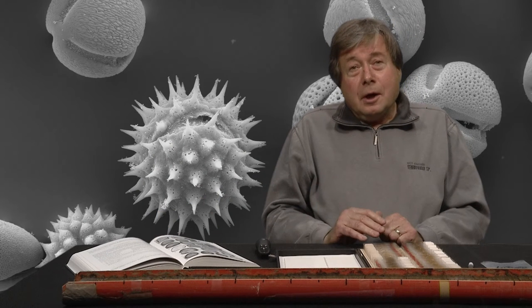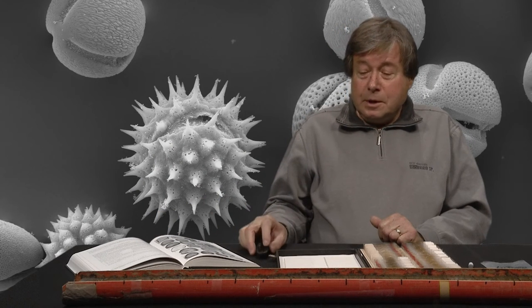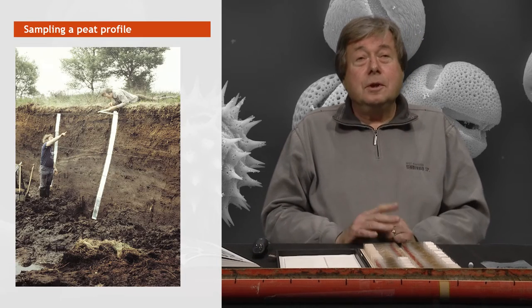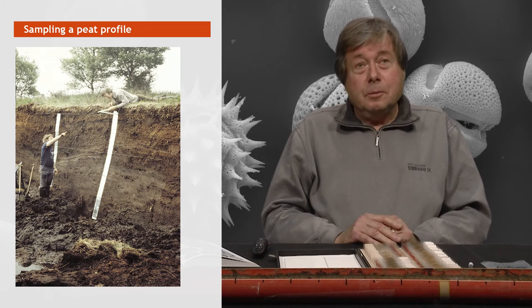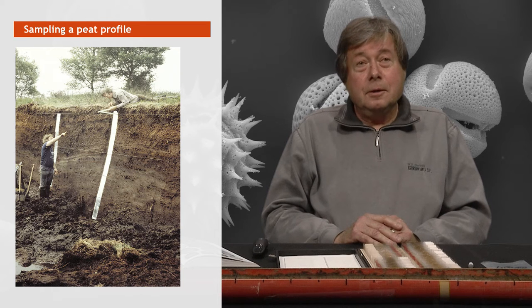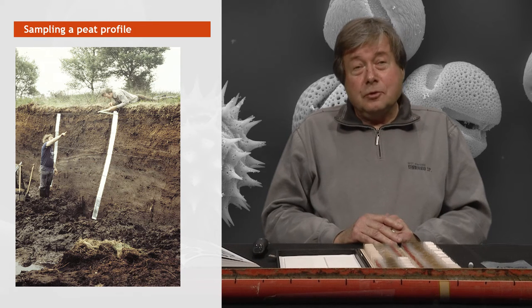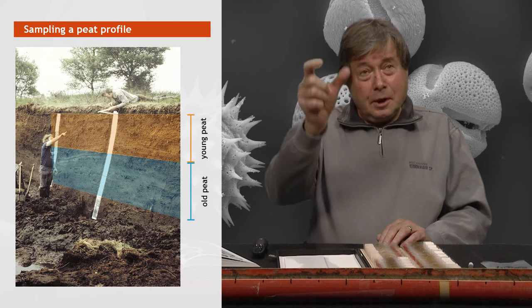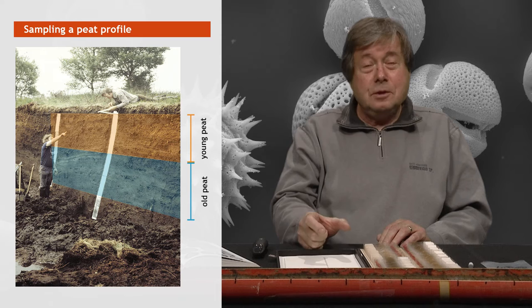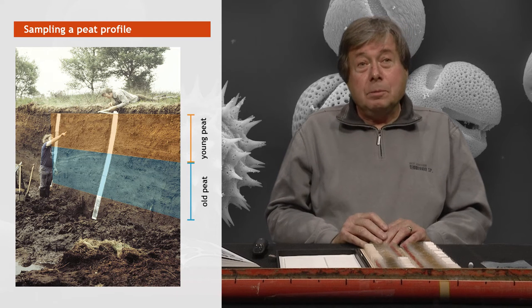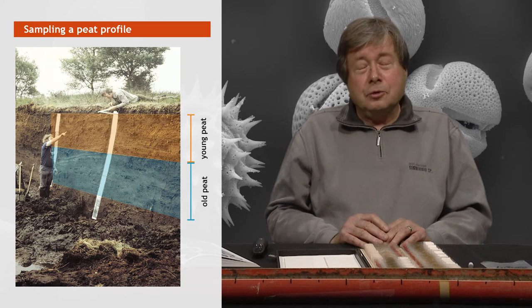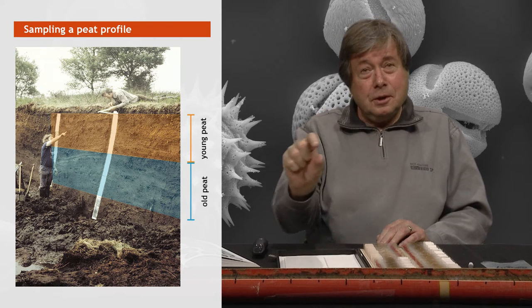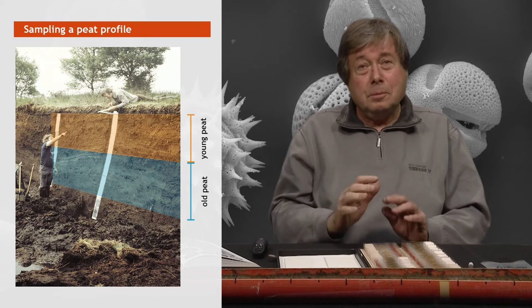What is our archive? Well, that can be a peat bog. Here you see a profile of about two and a half meters high. And the oldest peat is at the bottom and the youngest peat is at the top. And if you take a sample through the peat core, then you have a sample from old at the bottom to young at the top. And you can take samples every five centimeters, for example, and try to extract information from that.